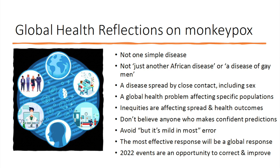It's a global health problem and it affects specific populations in different ways. There are clear inequities affecting transmission, spread, the size of outbreaks, and health outcomes. If you look at some of the deaths in the United States, they're very disadvantaged people with poor access to HIV care — and as a result they're getting severe infection. So it's not just about monkeypox; it's about the wider context.